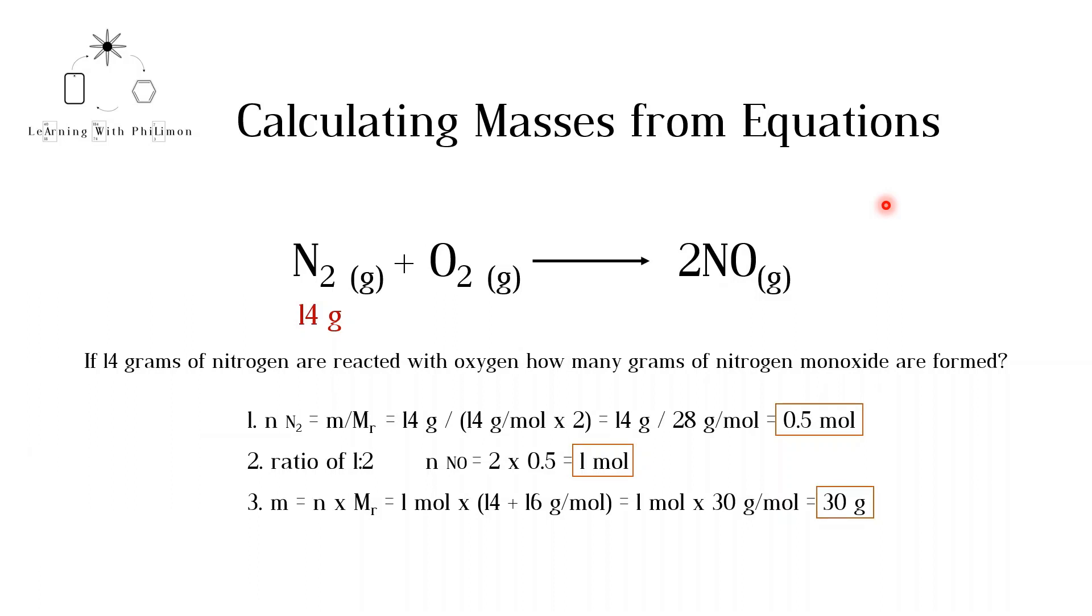A typical stoichiometry question is phrased like this: If 14 grams of nitrogen are reacted with oxygen, how many grams of nitrogen monoxide are formed? The first step in a stoichiometry question is to calculate the number of moles. See the previous video for more guidance on this. The moles of nitrogen are calculated by dividing the mass by the molecular mass. The molecular mass of nitrogen is simply the atomic mass of nitrogen 14 multiplied by 2.